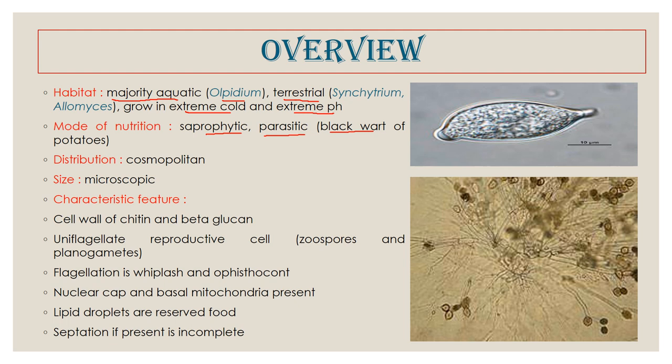Fungi belonging to class Chytridiomycetes are cosmopolitan in distribution and mostly microscopic in size. The chief characteristic feature of class Chytridiomycetes is that they have chitin and beta-glucan in their cell wall. Now, you might wonder that all fungi contain chitin, so what is characteristic of this Chytridiomycetes? Many fungi — for example, the Oomycetes — do not have chitin; instead they have cellulose, which is quite rare for fungi. So class Chytridiomycetes fungi have chitin and beta-glucan in their cell wall and no cellulose.